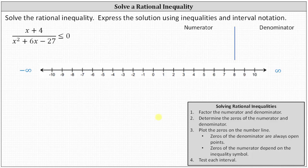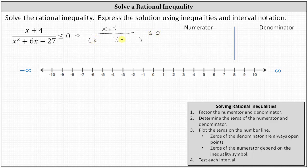Notice the numerator does not factor. So we have the quantity x plus four divided by the denominator, which will factor into two binomial factors. Because the first term is x squared, we have x and x. The terms in the second positions will be the factors of negative 27 that add to positive six, which are positive nine and negative three, giving us a factor of x plus nine and a factor of x minus three.